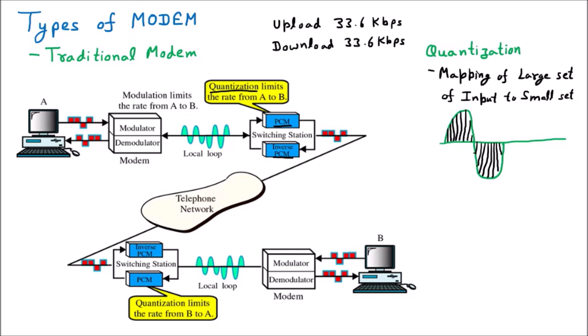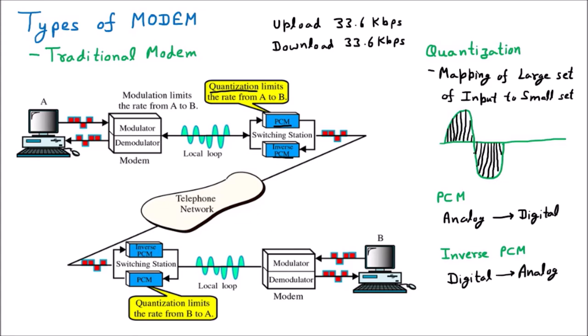Quantization helps in converting analog to digital and digital to analog by dividing the large set into small sets. There are two categories under quantization: the first is PCM, which stands for Pulse Code Modulation, and the second is inverse PCM, which is the inverse of Pulse Code Modulation. Whenever we are converting analog signal to digital, that is called PCM, and whenever we are converting digital to analog, that is called inverse PCM.